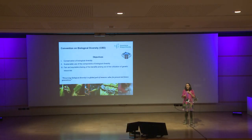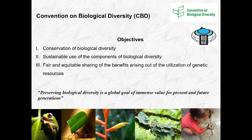The Convention on Biological Diversity took place in Rio, which became known as the Rio Earth Summit in 1992, and the intention is to stop the loss of biodiversity and to show its importance. It has three main objectives: the conservation of biological diversity, the sustainable use of its components, and the fair and equitable sharing of benefits arising from the utilisation of genetic resources. Preserving biological diversity is important not just for us, but also for future generations.